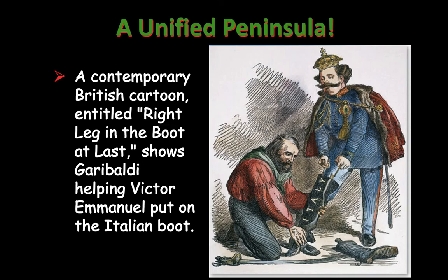A great cartoon done at the time shows Garibaldi in his red shirt — he lays down his sword, helping Victor Emmanuel put together this unified Italian state.